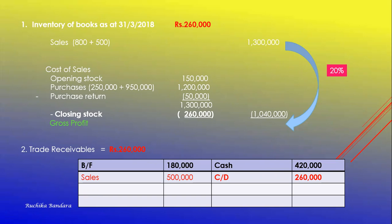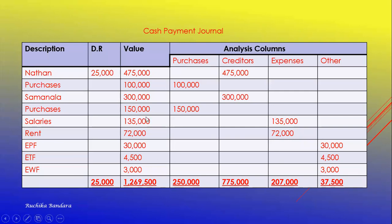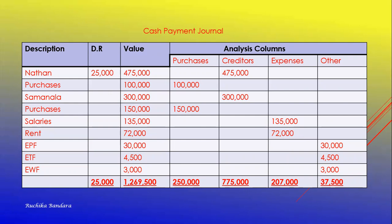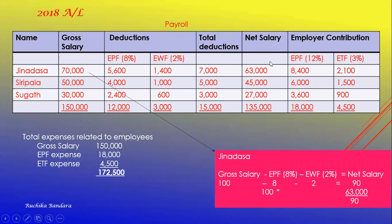When paying to employees: purchases on cash from Nardan 100,000 — purchases 100,000 in cash payment journal. Cash paid to Samanella 300,000 — creditor 300,000. Cash purchases from Samanella 150,000 — goes to cash payment journal. Total salaries paid to employees — Jinadasa, Siripala, and Sugat — altogether the addition is 135,000; that goes to the expense column. Rent paid 72,000, under expense 72,000. By using the salaries paid information, we make the pay sheet — that is the net salary value.